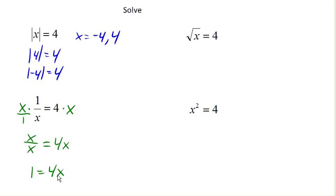Now I can divide both sides by 4 and get x equals 1/4 as my solution. Now, notice that this ends up being, after we simplify this, 1 equals 4x, just a basic linear equation, once we clear out that fraction.